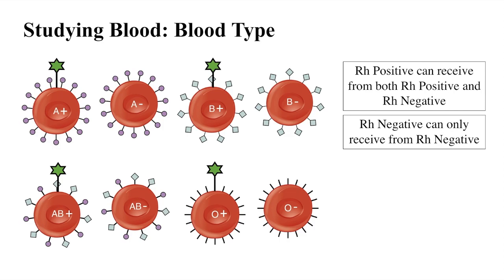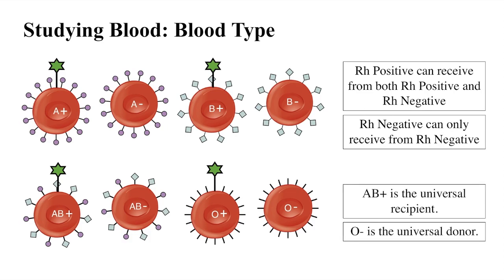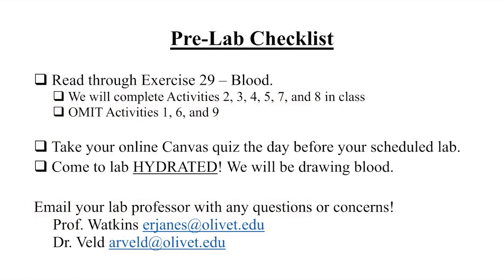For example, someone with A positive blood can receive A positive, A negative, O positive, or O negative blood. A person with B negative blood can only receive B negative or O negative blood. Now that we've discussed antigens, antibodies, and the RH factor, you'll be able to determine the right blood type for a patient receiving a blood transfusion. Do you know your blood type? You'll be determining your blood type in lab using blood typing cards. If you have any questions or concerns, be sure to reach out to your lab instructor.